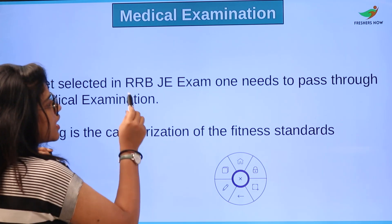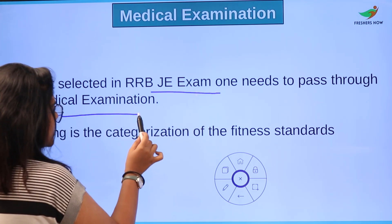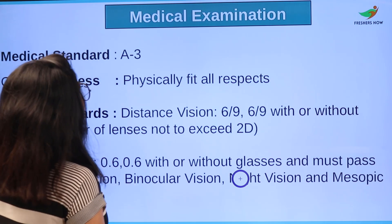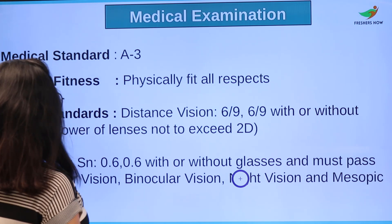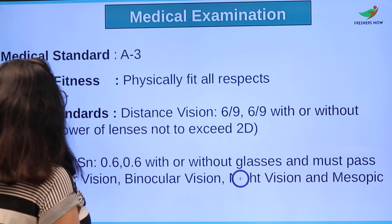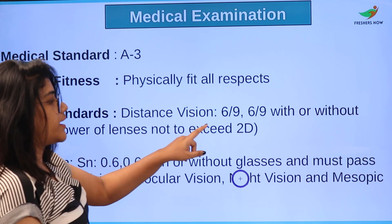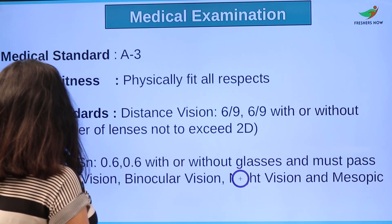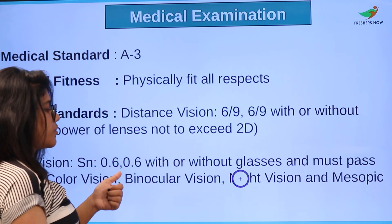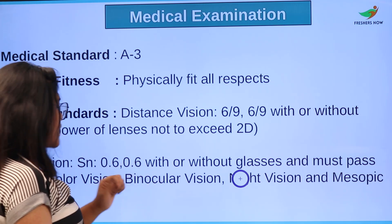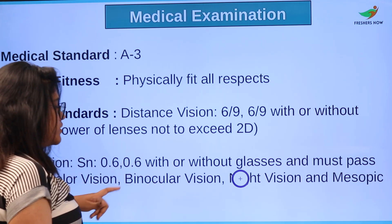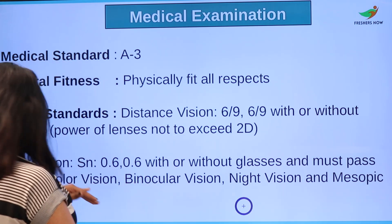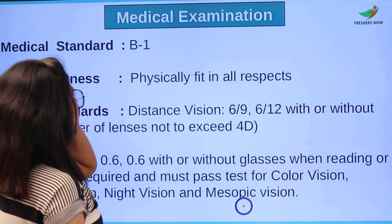For medical examination, to get selected in RRB JE exam, one needs to pass through this medical examination. For medical standard A3: general fitness — physically fit in all aspects. For vision: distance vision 6/9 and 6/9, with or without glasses, and the power of lens should not exceed 2D. For near vision, SN 0.6 and 0.6 with or without glasses. The candidate must pass tests of color vision, binocular vision, night vision, and mesopic vision.